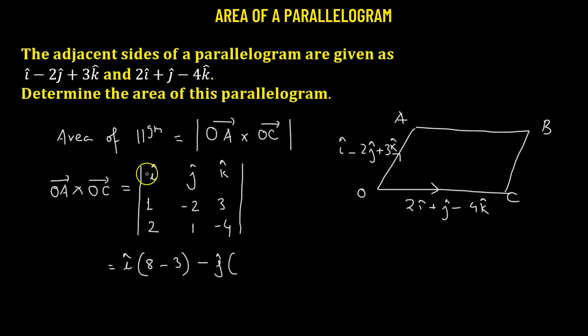So for this, we are going to reject the first row or the row that contains j and the column that contains j. So we're left with the determinant 1, 3, 2, negative 4. So 1 times negative 4, that will be negative 4, minus 3 times 2, so that is 6, plus k cap.